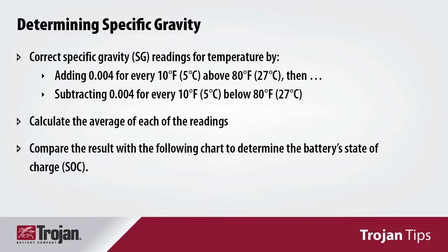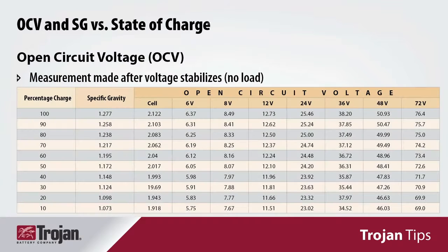Correct specific gravity readings for temperature by adding .004 for every 10 degrees Fahrenheit above 80 degrees, and subtract .004 for every 10 degrees below 80 degrees Fahrenheit. Calculate the average of each of the readings and compare the result with this chart to determine the battery's state of charge.